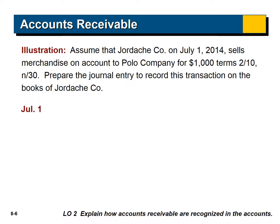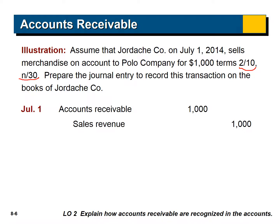You may remember from chapter 5 that terms 2/10 net 30 means a 2% discount if paid in 10 days, with the net balance due in 30 days. The journal entry to record this transaction — which we've seen in chapter 5 — is accounts receivable and sales revenue. At the time we deliver the goods, we record the accounts receivable.